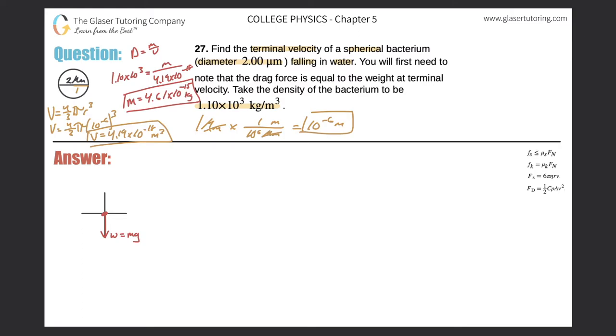Now that allows me to calculate the weight. So the weight now is equal to 4.61 times 10 to the minus 15, all multiplied by gravity. So the weight is going to be 4.61 times 10 to the minus 15 times 9.8, and we get a value of 4.52 times 10 to the minus 14.